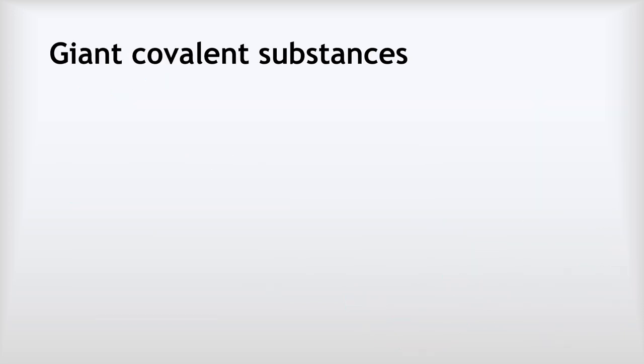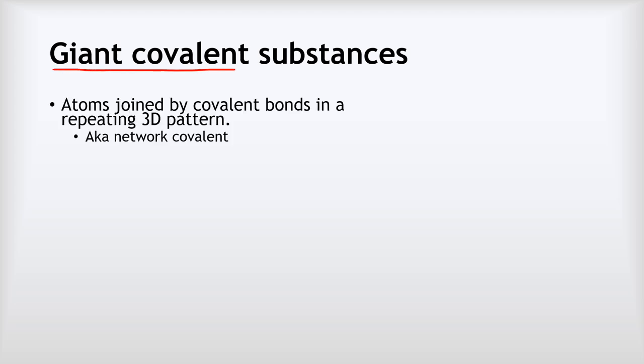So our second type of covalent structure is called a giant covalent structure, and this is made of atoms joined by covalent bonds in a repeating 3D pattern. We can also call this network covalent because it forms this kind of network structure that just repeats on and on and on.